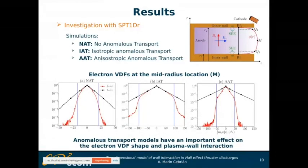We propose three different simulations: one without anomalous transport, one with the isotropic anomalous transport model, and one with the anisotropic anomalous transport model. As you can see, when we calculate the electron velocity distribution function at the mid-radius, the results are totally different from the Maxwellian solution. Furthermore, the different models give different results, so we can conclude that anomalous transport models have an important effect on the electron velocity distribution function shape and plasma wall interaction.